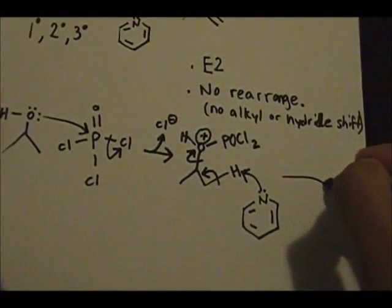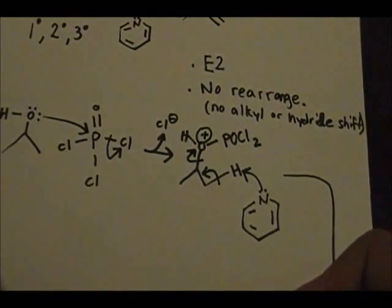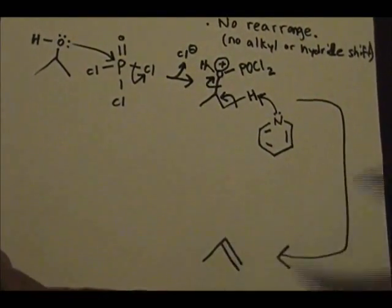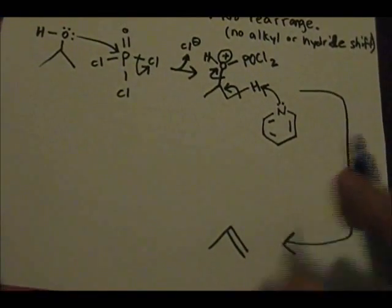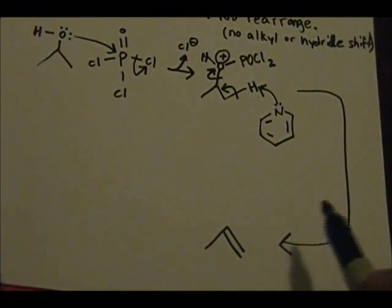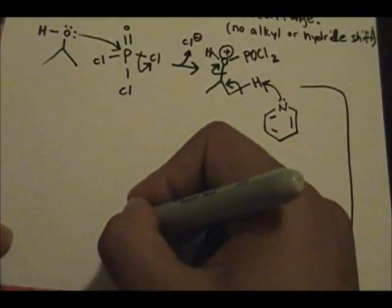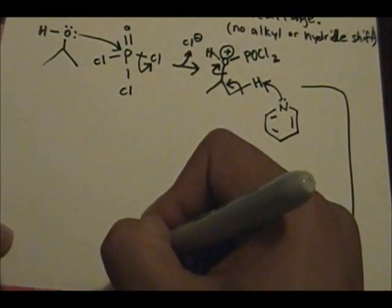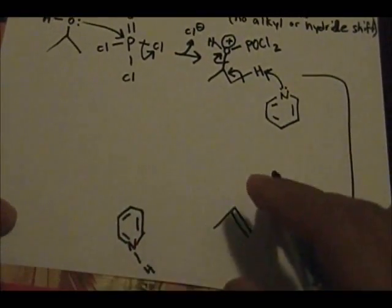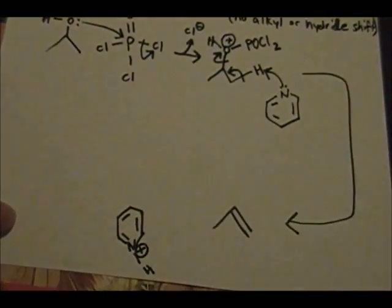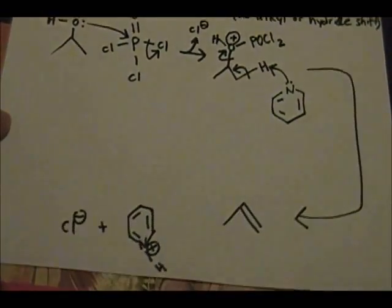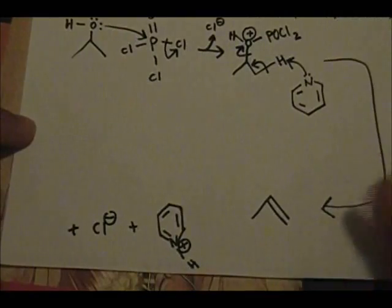And the product of this step, I'll draw it down here. The product of this step is your alkene. And that's the major product that we want to focus on. Some other not so important products you form are the pyridine with the hydrogen attached to it. But now the nitrogen has a positive charge. You still have chlorine present.